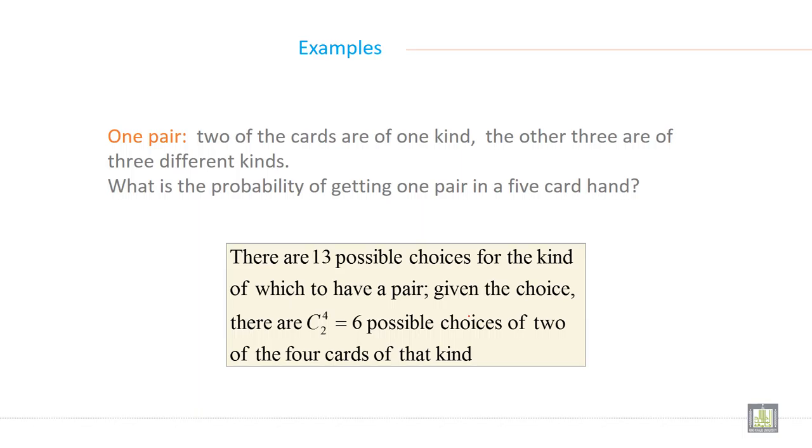One pair: Two of the cards are of one kind. The other three are of three different kinds. What is the probability of getting one pair in a 5-card hand?